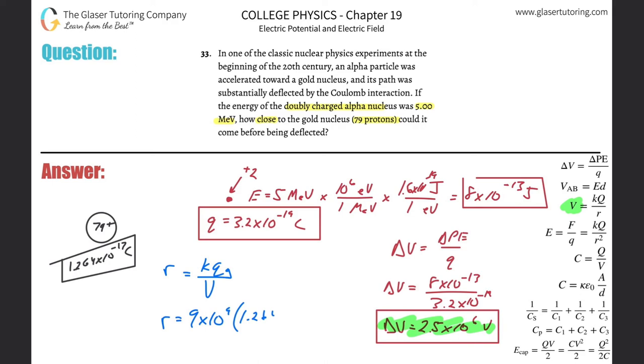So that's going to be the 1.264 times 10 to the minus 17th. And then that's all divided by that voltage of 2.5 times 10 to the 6th. So 9 times 10 to the 9th multiplied by 1.264 times 10 to the minus 17th, divided by that value. And look at that, r is 4.55 times 10 to the negative 14th meters.